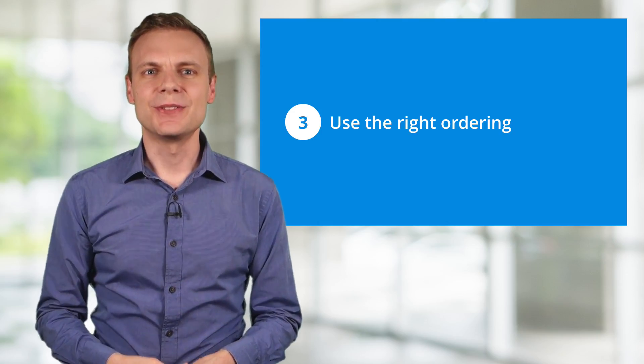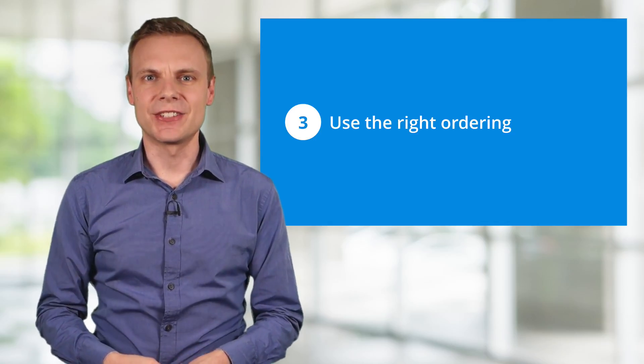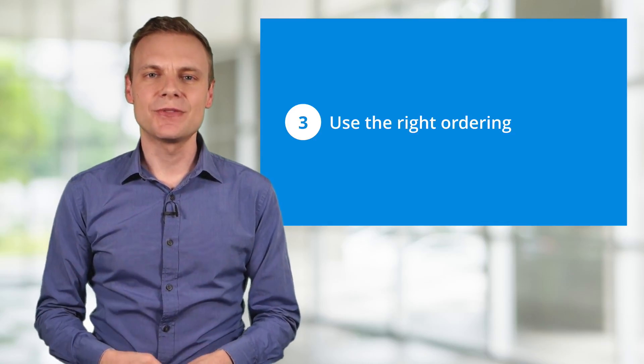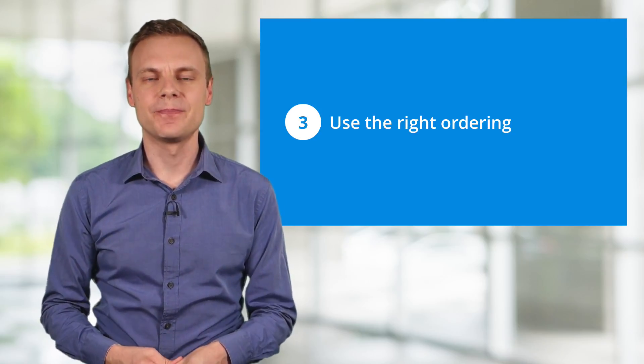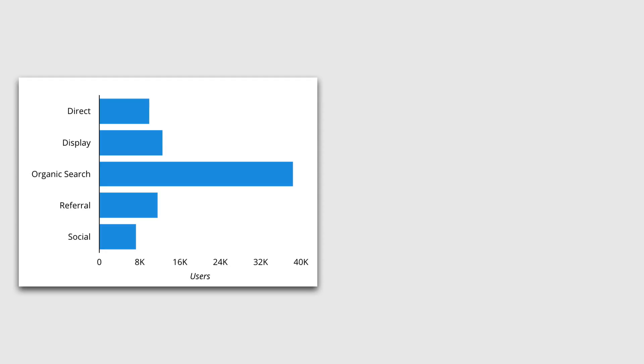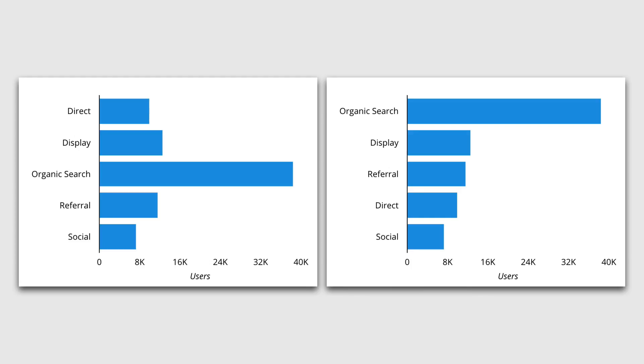Tip number three is to use the right ordering for the data in the chart. It can be easier to identify and interpret differences in a chart by using appropriate ordering. For example, here we can see a bar chart where the data is ordered alphabetically based on the name of the category. This makes it harder to see the relative performance of the marketing channels. When we reorder the chart based on the value instead of the category, it makes it easier to interpret and compare performance.